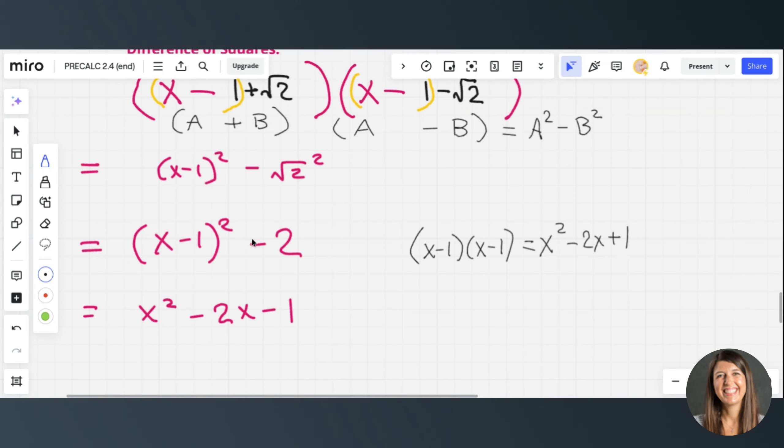And then we've got to add the minus 2. So that's how we get x squared minus 2x minus 1.